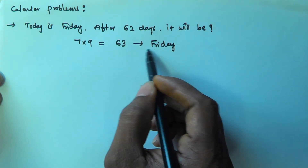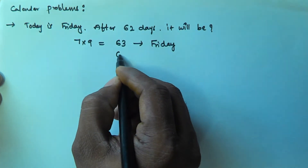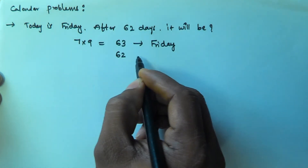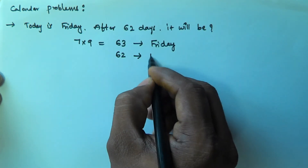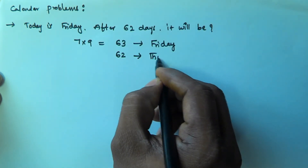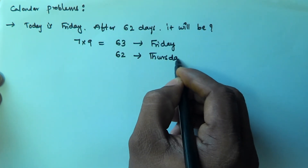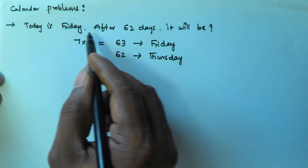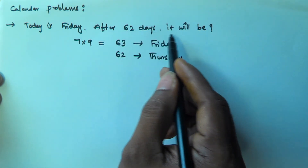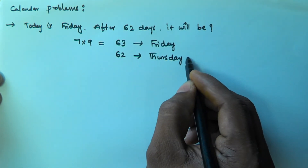After 63 days it is going to be Friday, so after 62 days it is going to be Thursday. That means, if today is Friday, after 62 days it will be Thursday.